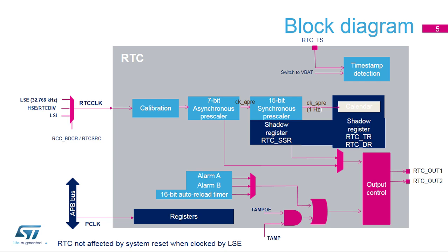The RTC registers are write-protected to avoid any possible parasitic write accesses. First, the disabled backup domain protection bit must be set in the power controller control register in order to enable RTC write accesses. Then, a specific sequence must be written in the RTC write protection register. Initialization mode must be entered in order to change the clock prescaler values or the calendar value. The RTC calendar keeps running in all low-power modes, in VBAT mode and during reset when it is clocked by the LSE. Initialization of the time and date registers is performed through their shadow registers, which are in the APB clock domain.